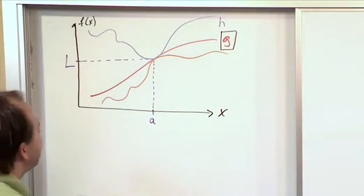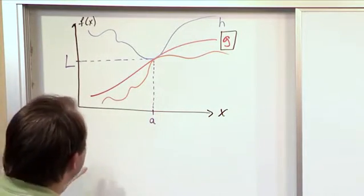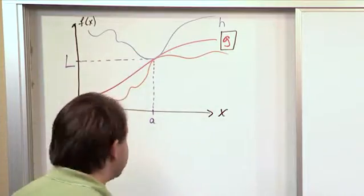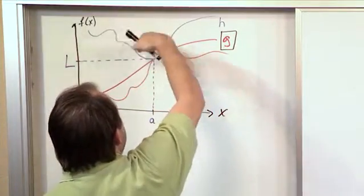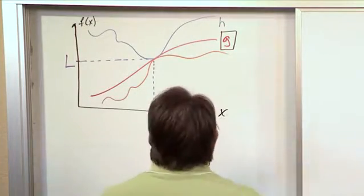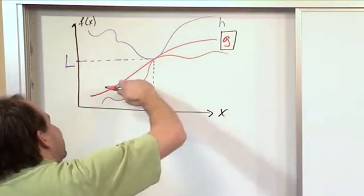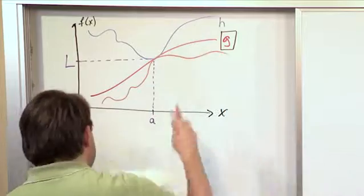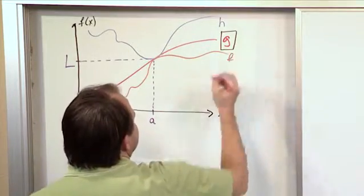And what we've basically had to draw on the board here is that if we find a function above, where the entire function is above the function of interest called h, and if we can also find a function that exists entirely below the function, and I forgot to put this, we'll call this function f.